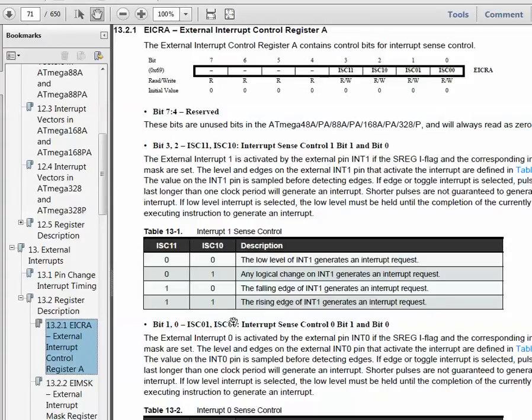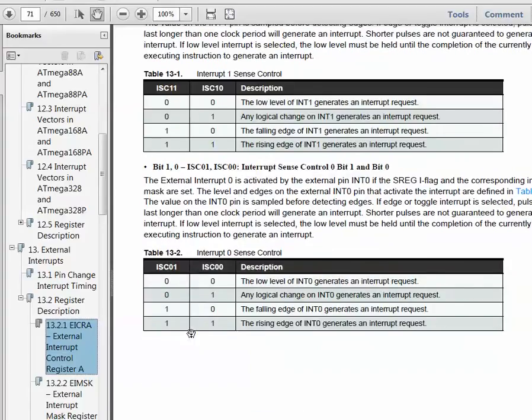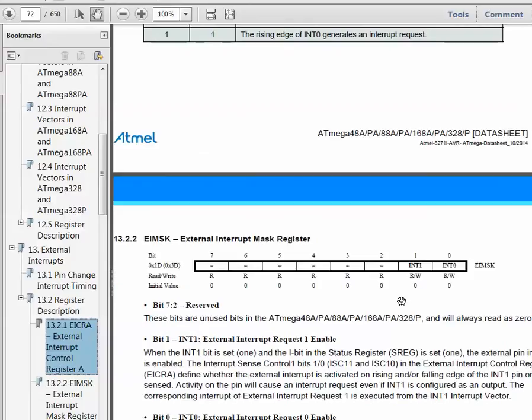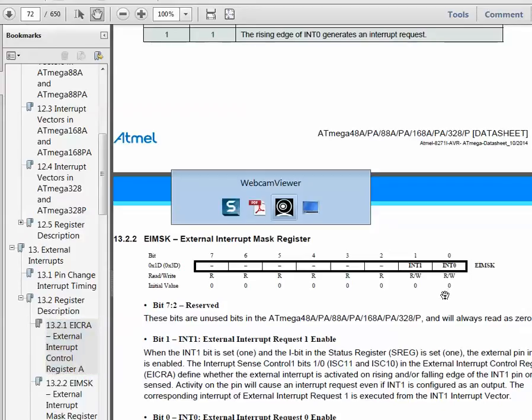And then the other interrupt would be the external interrupt mask register. And this just enables interrupts from these two sources. So if we write a one to this, then we are enabling interrupts from INT1. And if we write a one to the zero bit, then we are enabling interrupts from INT0. All right, now we'll get into the example.